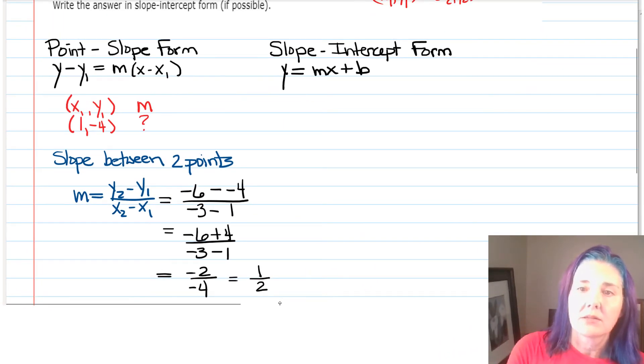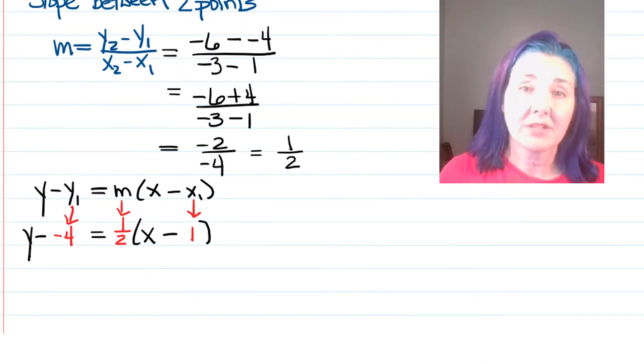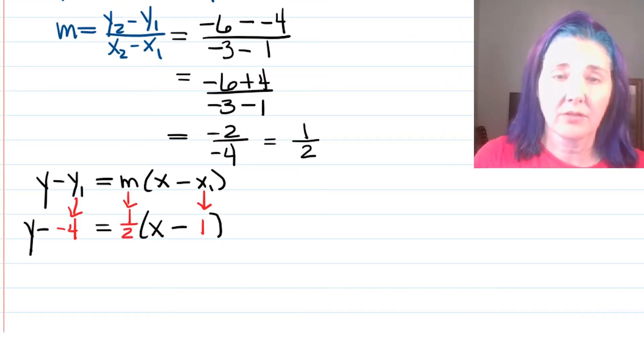So, now I know that the slope, that mystery slope that we were looking for is 1/2. So, I'm going to plug into the point-slope form. Replacing y₁ with -4, m with 1/2, and x₁ with 1, we have y - (-4). Be careful there. It's easy to make a mistake. There's a minus in the formula, and there's a negative on the 4, so you have two minuses, equals 1/2(x - 1).